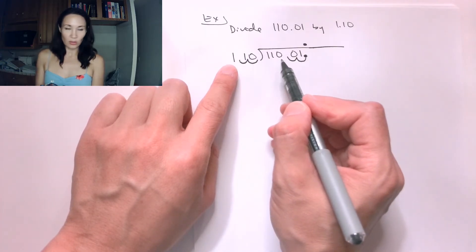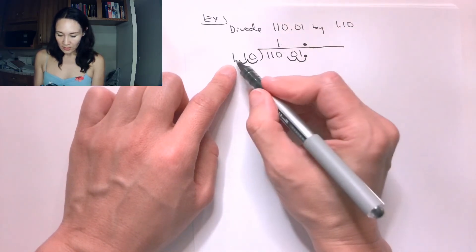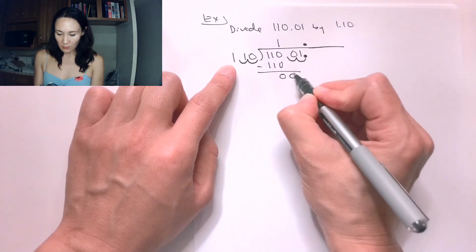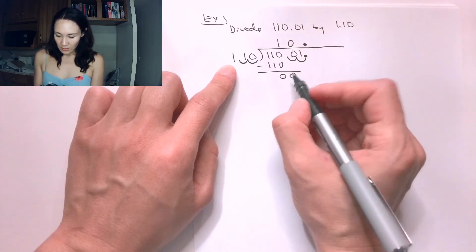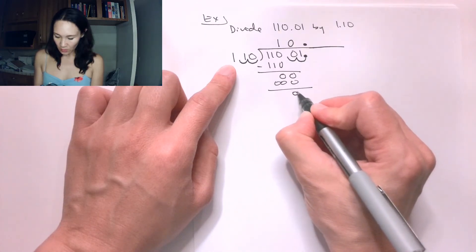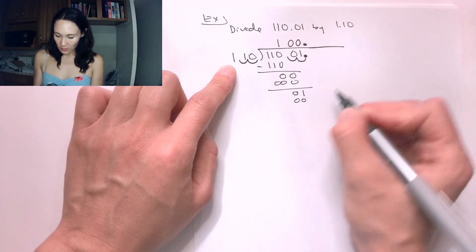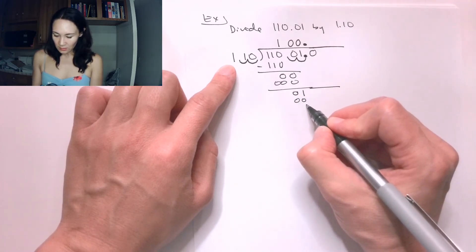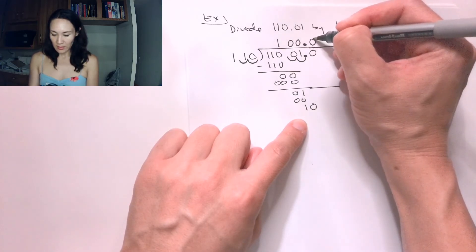Since the divisor is three digits, I'm going to look at the first three digits. The answer is 1. So I do 1 times 110, which gives 110. I change the sign and this gives me 0. I drop down my next 0. I already know 110 doesn't go into 00 because it's too small, so I'll put a 0 here. This gives me 000. I subtract that and get 01. The answer is still 0, so I put 00. Now I can drop down the digit after the decimal point, which gives me 10. 110 still doesn't go into 10, so this will still be a 0.